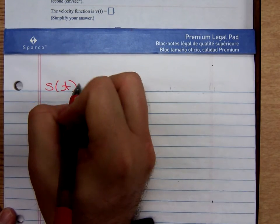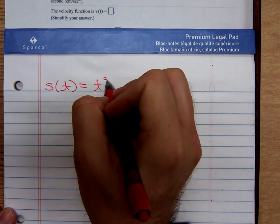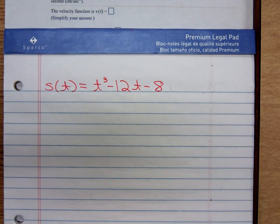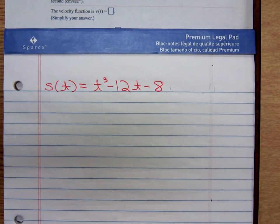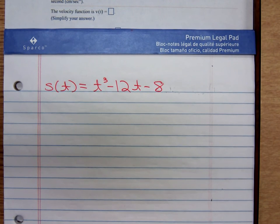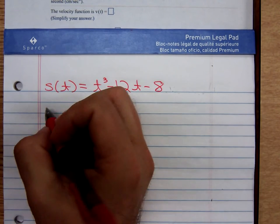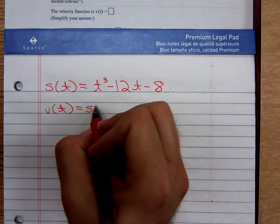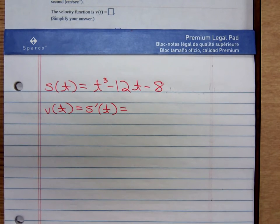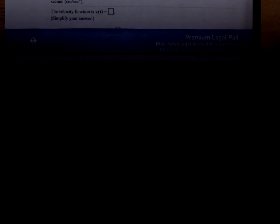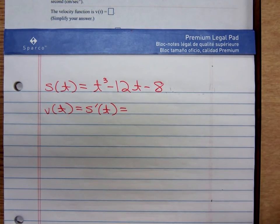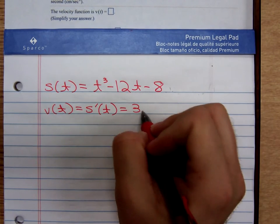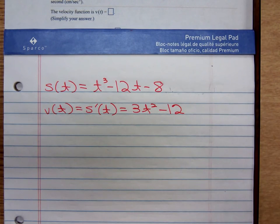S(t), our position function for this particle that's moving along, is t^3 - 12t - 8. Remember, velocity is defined as the rate of change of the position of some particle or object. The rate of change of a function is given by the derivative. So we differentiate, and that gives me 3t^2 - 12 for my velocity function.